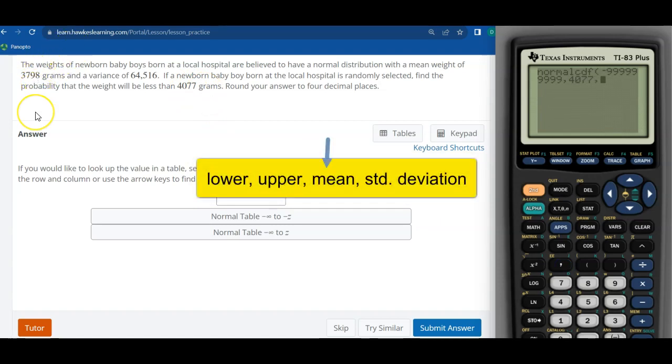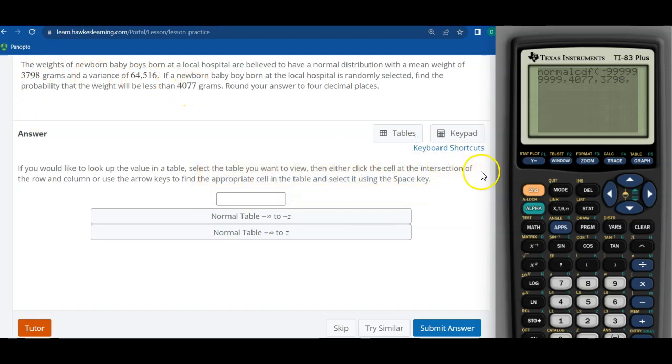That's going to be our number where the distribution ends. The mean goes next, so 3798, and then finally the variance. Again, that's the square root. The standard deviation is the square root of variance. So I take the square root of 64516, close that parentheses, and then just hit enter. It's not pasting anything, it's just immediately finding the probability for us.